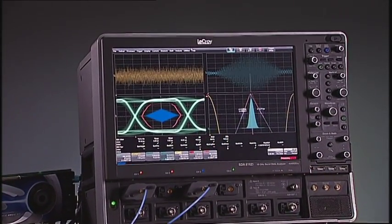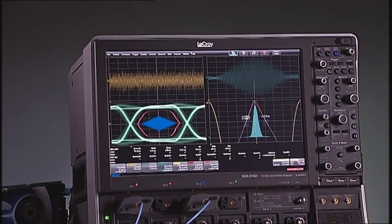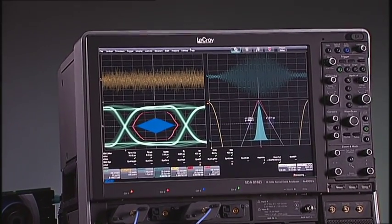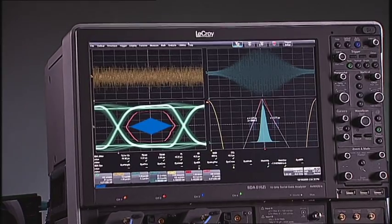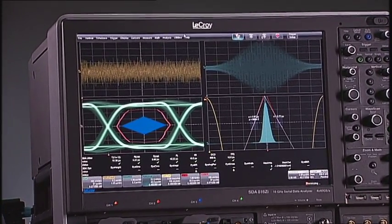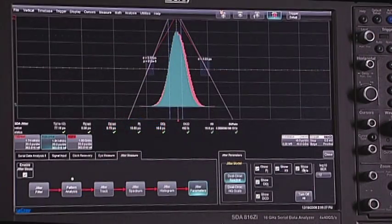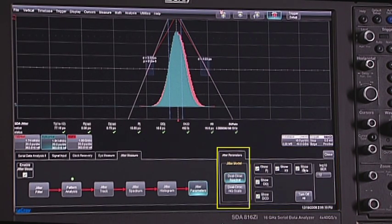The LaCroix SDA 8Zi series of serial data analyzers provides superior serial data analysis at speeds 10 to 100 times faster than other oscilloscopes. This specific example showed how the deep LaCroix SDA 2 toolbox was used to understand the effects of crosstalk on a serial data jitter measurement.